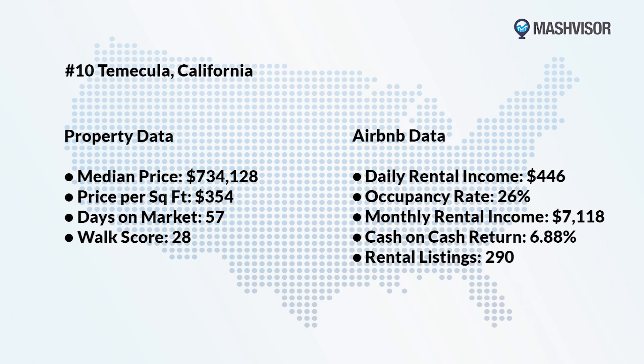Now let's go over the top 10 locations for Airbnb cash-on-cash return in 2022. Number 10: Temecula, California. The city of Temecula is known as a tourist and resort destination that attracts over 4 million visitors annually. In addition to golfing, fishing, and wine tours, there's a famous balloon and wine festival that happens yearly. It makes our list due to its rental income of over $7,000 and an Airbnb daily rate of $446.